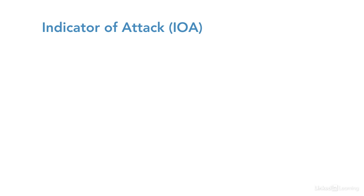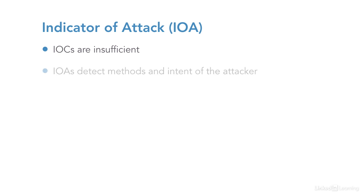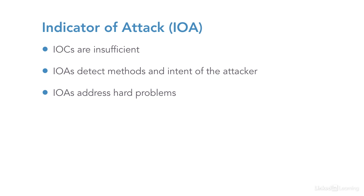With the prevalence of poly and metamorphic malware amongst other challenges, signatures and IOCs are insufficient for the level of malware detection and prevention needed nowadays to prevent compromise. Unlike IOCs, an Indicator of Attack, or IOA, focuses on detecting the methods and intent of what an attacker is trying to accomplish, regardless of the malware or exploit used in the attack. This includes detecting hard problems for traditional defences such as intrusions into systems using legitimate but stolen credentials and detecting software which has the characteristics of zero-day exploits.